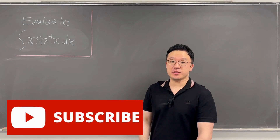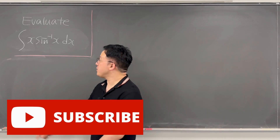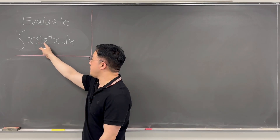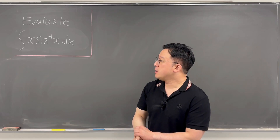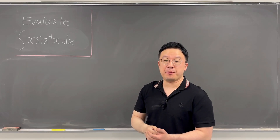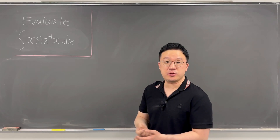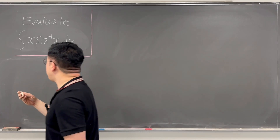Okay, here's an interesting viewer-suggested integral. So the question is, evaluate this integral: x times sine inverse of x, dx. Looks like we need to use integration by parts and then maybe trigonometric substitution after.